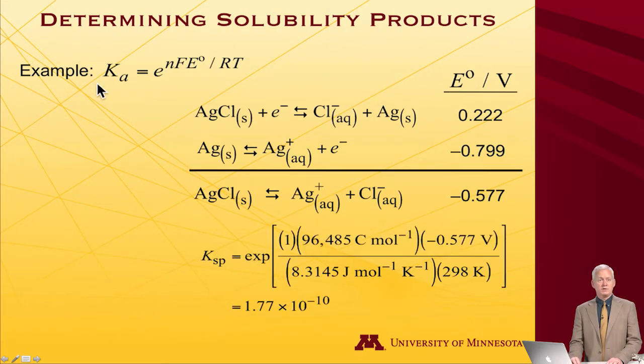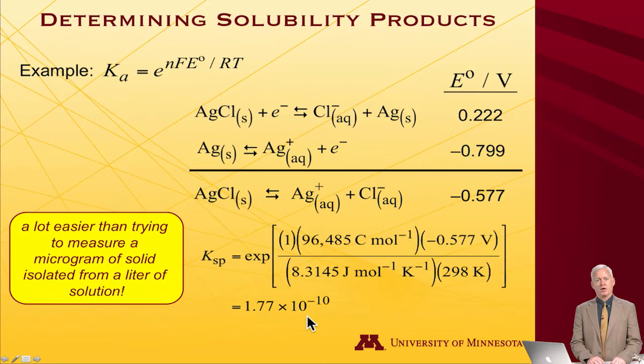So let me now plug that into this equation. And now, what I'll call this is a special name. This equilibrium constant is a solubility product equilibrium constant. Something one often sees in first year chemistry. So, E to the single electron, so N is 1. There's our Faraday constant. There's our worked out standard potential, minus 0.577 volts. Here is R. Here is T. Net result, 1.77 times 10 to the minus tenth for the solubility product.